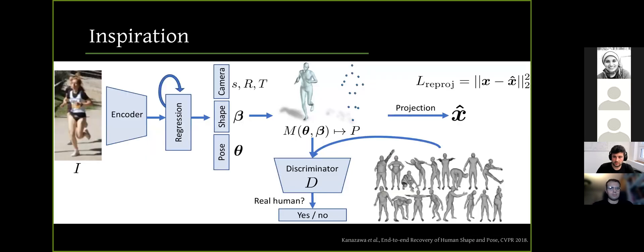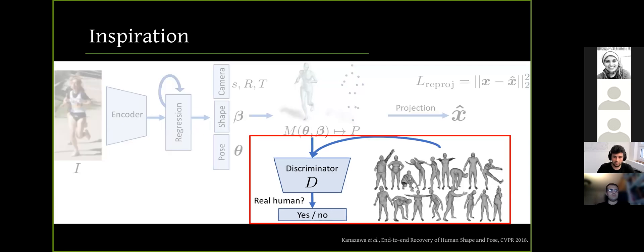So to address all these problems, we take inspiration from HMR icon that uses an unpaired dataset of static 3D humans in an adversarial training approach. However, we want to be able to train a temporal model. So the question is how to obtain realistic motion sequences in sufficient quality for such kind of adversarial training.